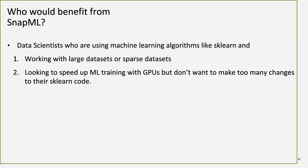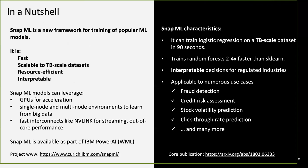To summarize Snap ML: it is fast, scalable, resource-efficient, and interpretable. It uses GPU acceleration, can run on multiple nodes (commercial version), is limited to two GPUs on a single node in the free version, and leverages NVLink for out-of-core performance on IBM Power systems. It is particularly well-suited for financial services use cases.